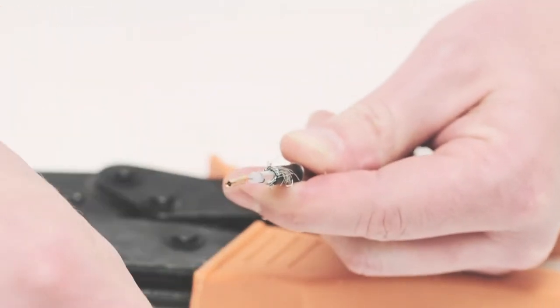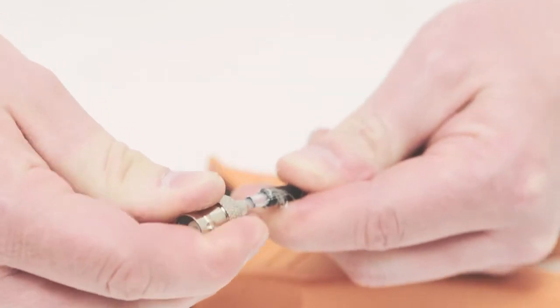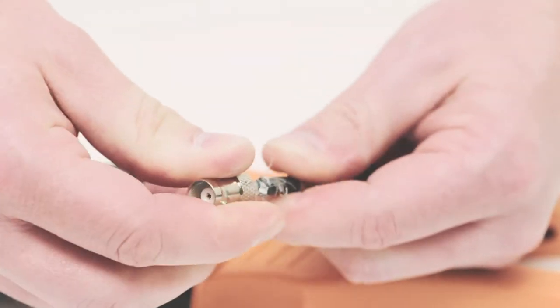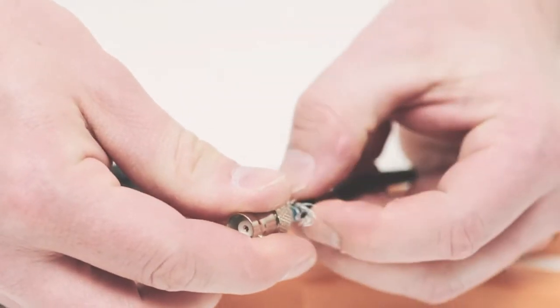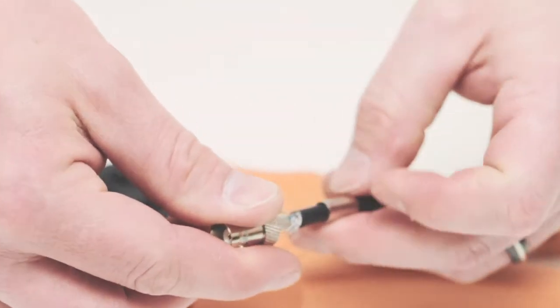Slide on the BNC female connector housing, making sure that you slide it all the way up against the jacket. Fold the braid back over the connector housing and slide up the ferrule.